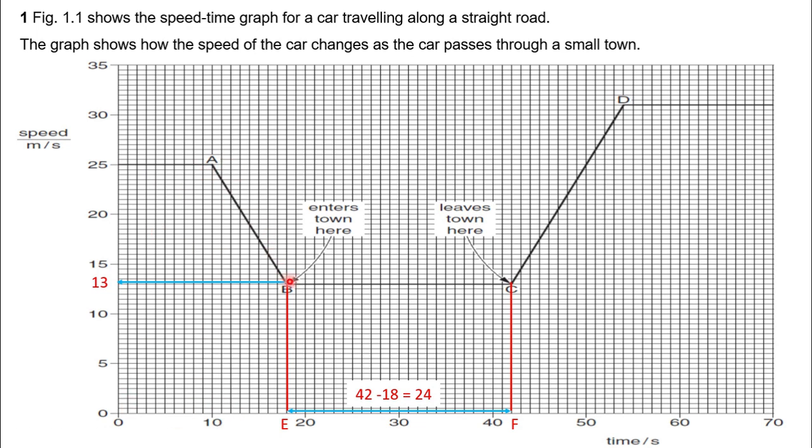While A to B indicates deceleration up to 18 seconds. Then the third section B to C shows again constant speed of 13 meters per second from 18 seconds to 42 seconds.